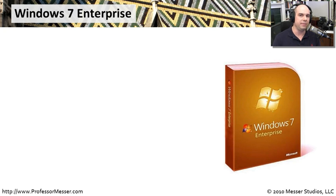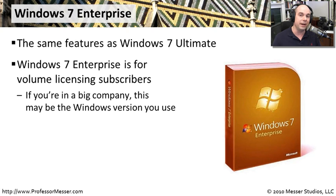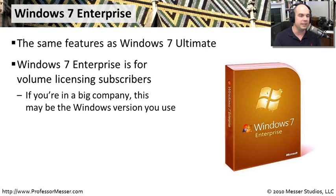A version of Windows 7 you cannot buy off the shelf is Windows 7 Enterprise. It has exactly the same feature set as Windows 7 Ultimate — the same remote desktop, BranchCache, BitLocker, everything. The difference is that this version is designed for very large enterprises that already have a volume licensing agreement with Microsoft. In that case, Microsoft gives you one disc that you can load on all your computers without going through individual per-copy licensing. If you don't have a licensing agreement with Microsoft but still want the same functionality, simply use Windows 7 Ultimate — it is a one-for-one exact match to Windows 7 Enterprise.